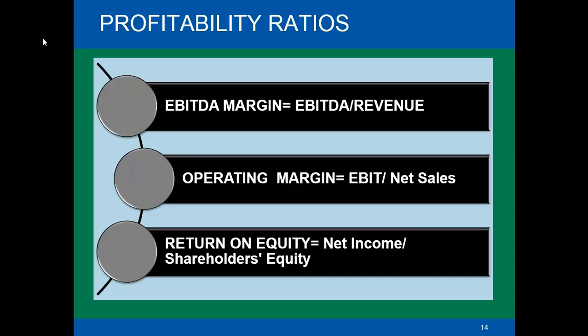Now we'll be discussing the profitability ratios. The basic purpose of profitability ratios is to understand what kind of profit margin a company is making. Profitability margins can be improved either by reducing cost or increasing the selling price. We can also compare the margin of one company with another company in the same industry.